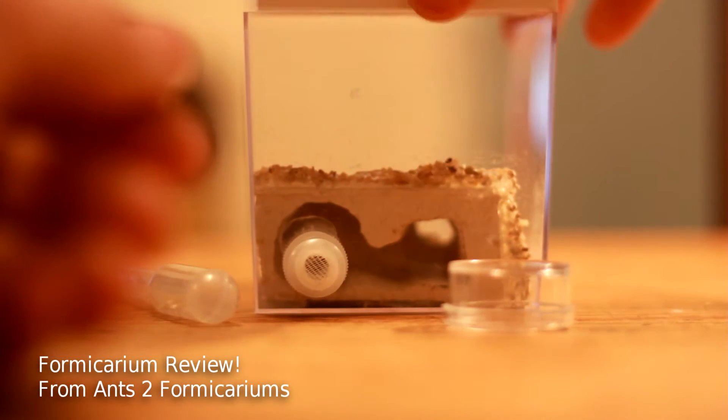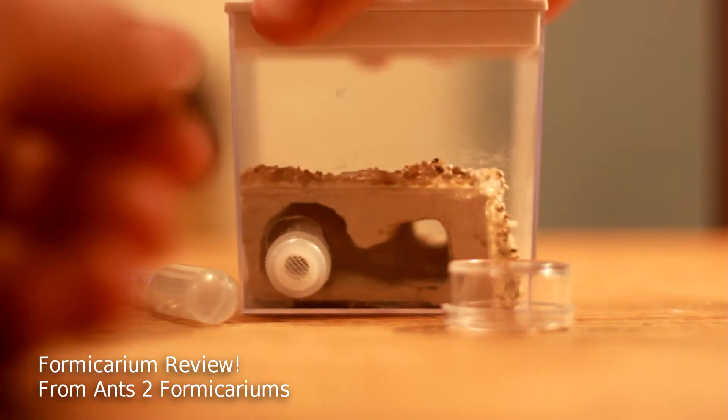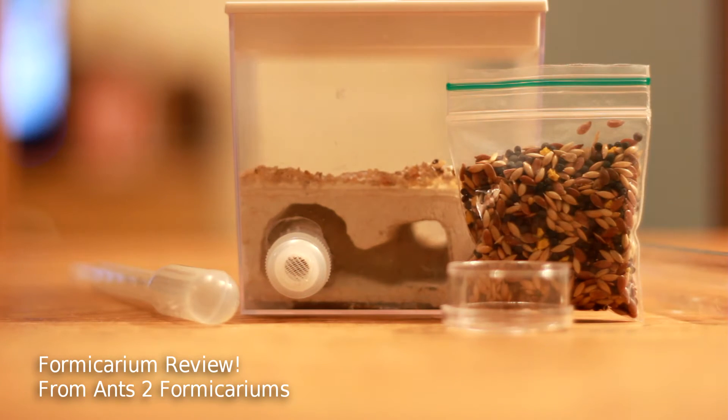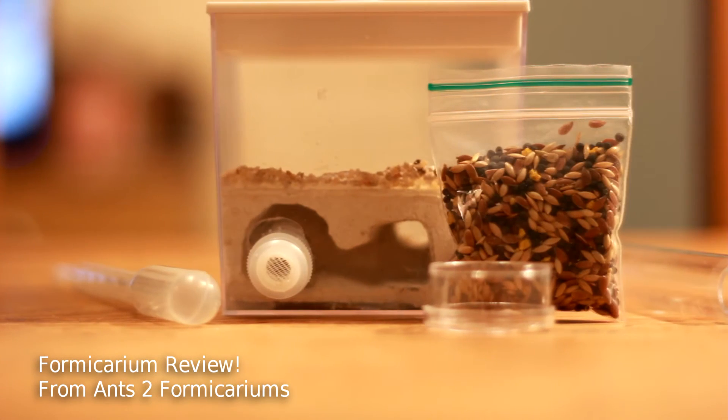Oh well, anyway, this is a really nice little formicarium. You get a pipette, water dish, seeds, and test tubes. It's a white tongue block inside a crystal clear acrylic box. You've got a lid for the top and the lid's got its own ventilation. Nothing's going to get out that ventilation, by the way.